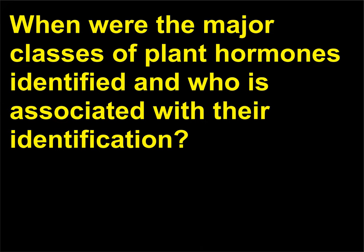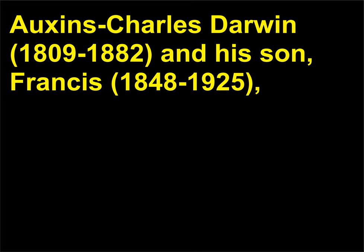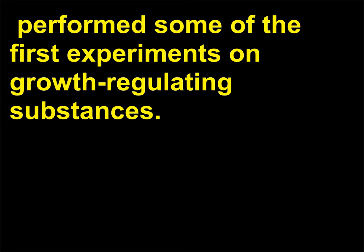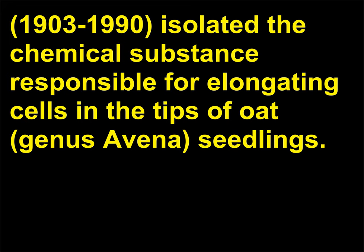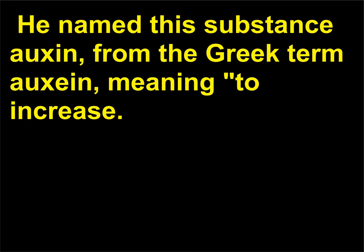When were the major classes of plant hormones identified and who is associated with their identification? Auxins: Charles Darwin (1809–1882) and his son Francis (1848–1925) performed some of the first experiments on growth-regulating substances, publishing their results in 1881 in The Power of Movement in Plants. In 1926, Fritz W. Went (1903–1990) isolated the chemical substance responsible for elongating cells in the tips of oat (genus Avena) seedlings. He named this substance auxin, from the Greek term auxein, meaning to increase.